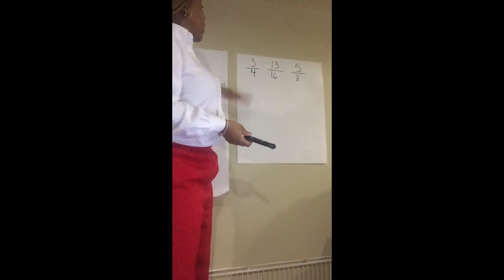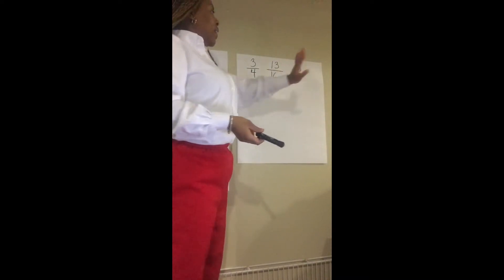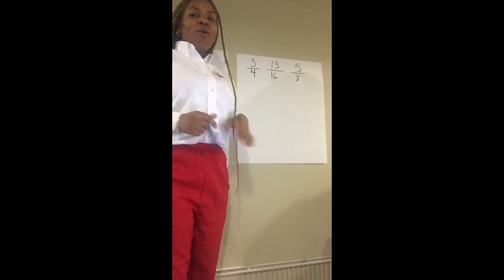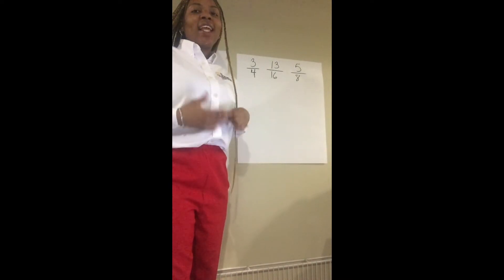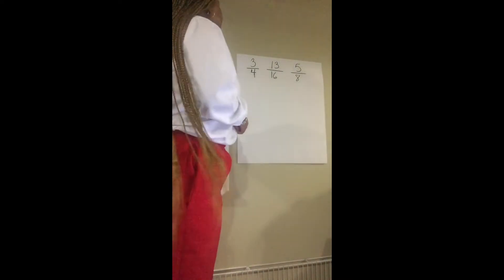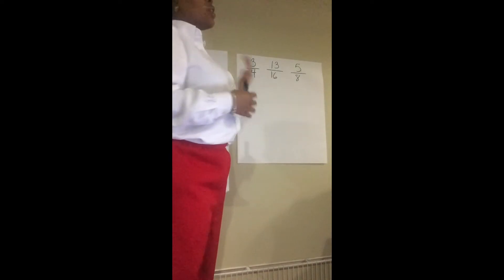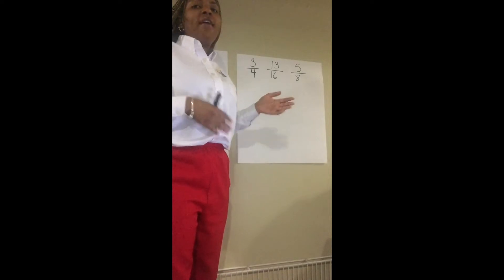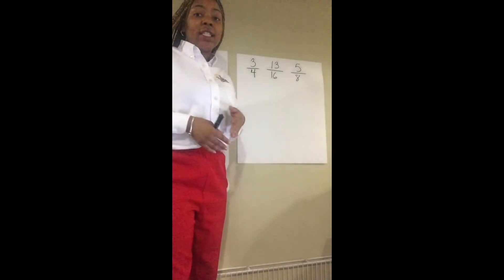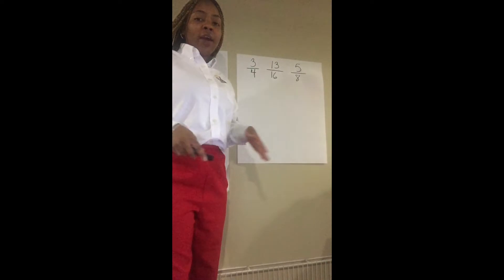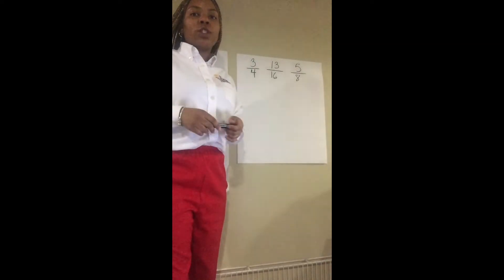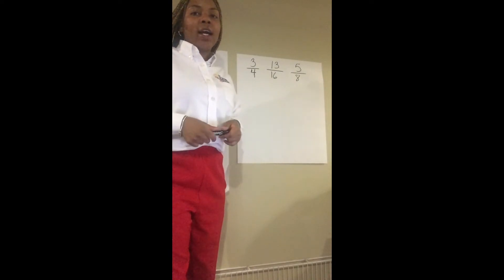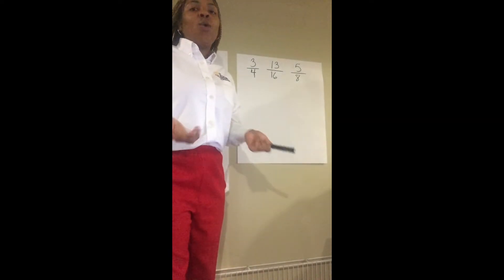We're going to work with three fourths, thirteen sixteenths, and five eighths, and we will be putting these fractions in ascending order, or better known as least to greatest. Now what's the first thing that we need to do when looking at these fractions? Find the common denominator. Yes, so when comparing the order of fractions, the first thing you want to do is look at the denominator. If you don't have a common denominator, you need to find one.